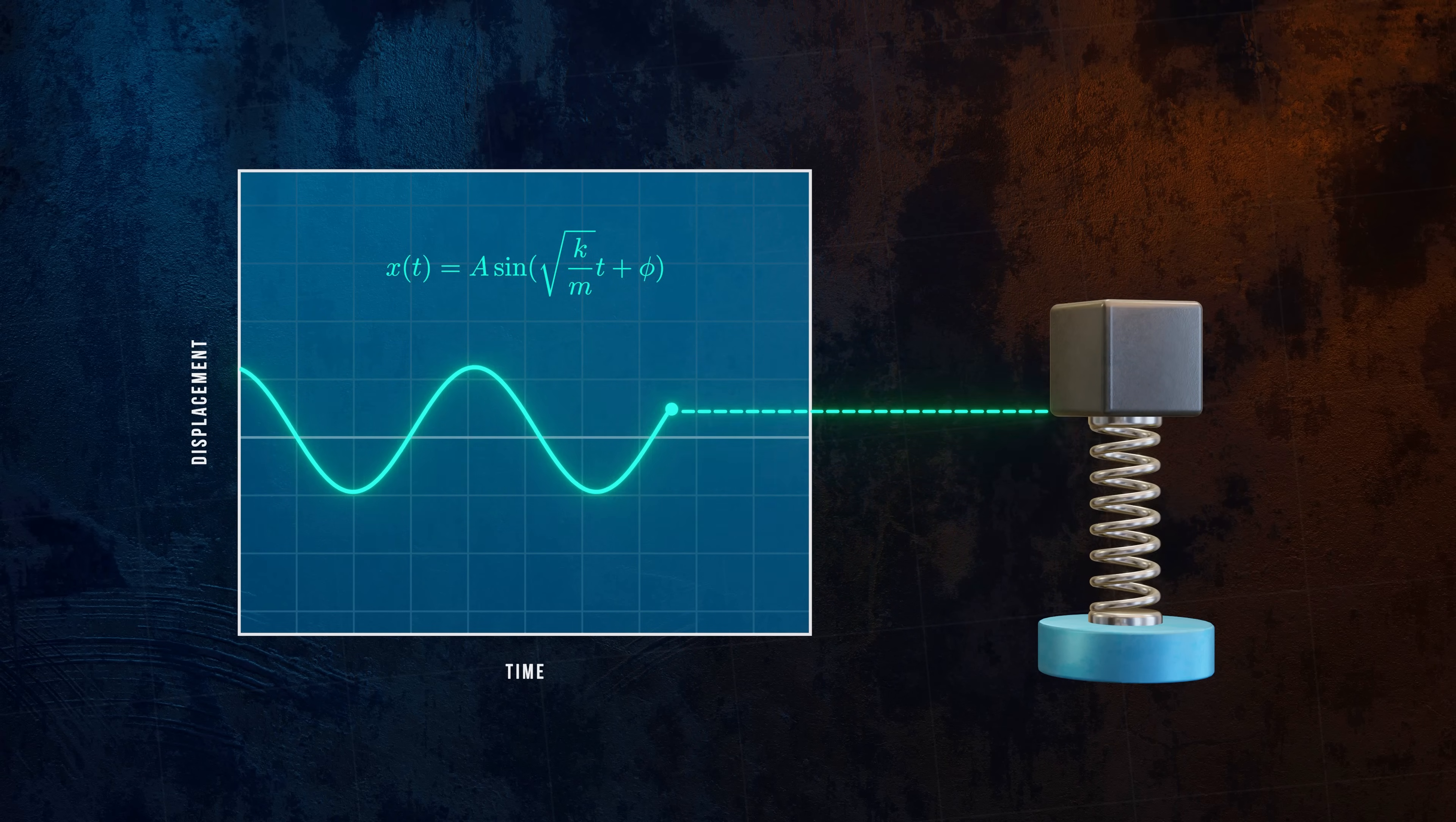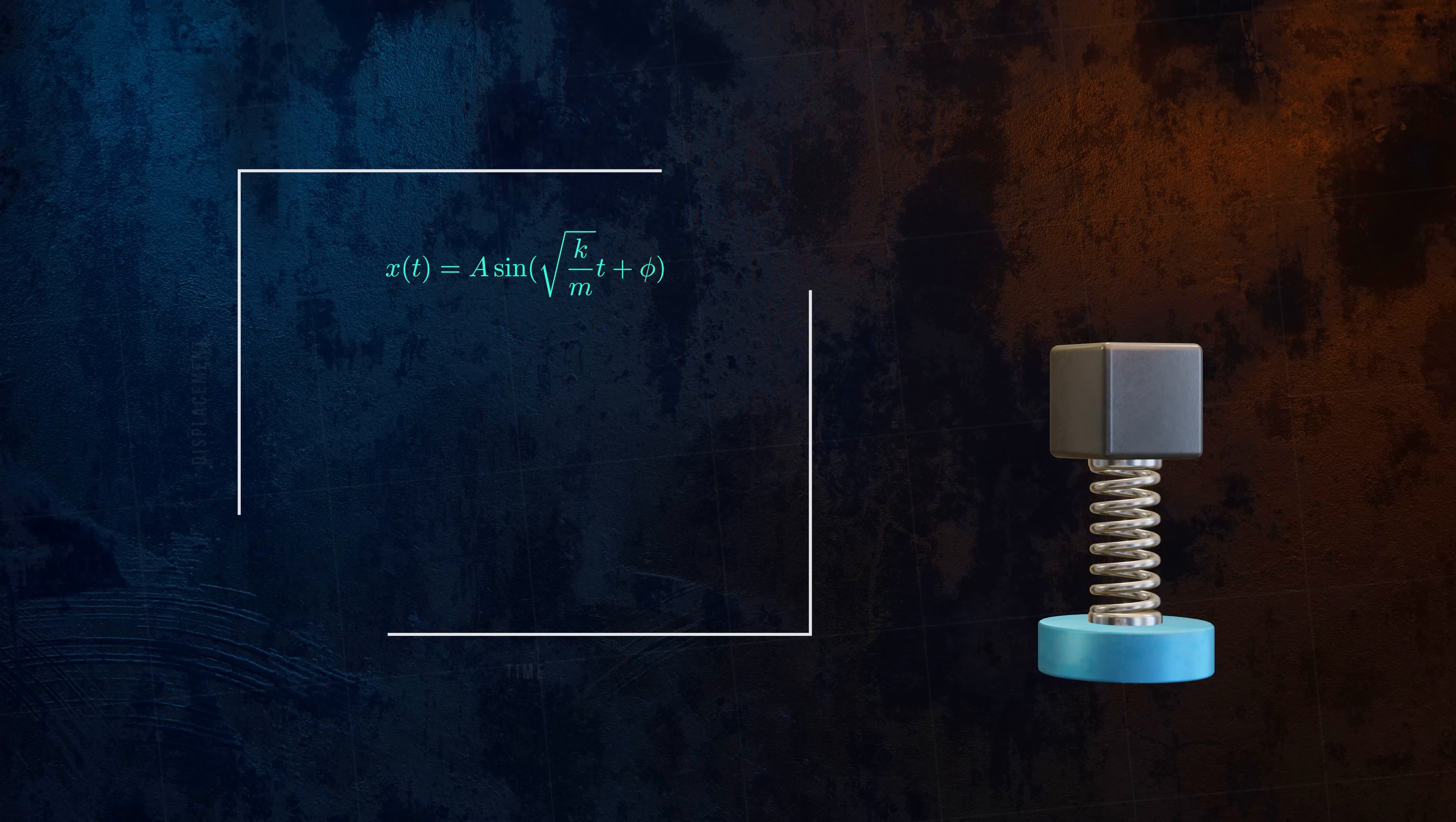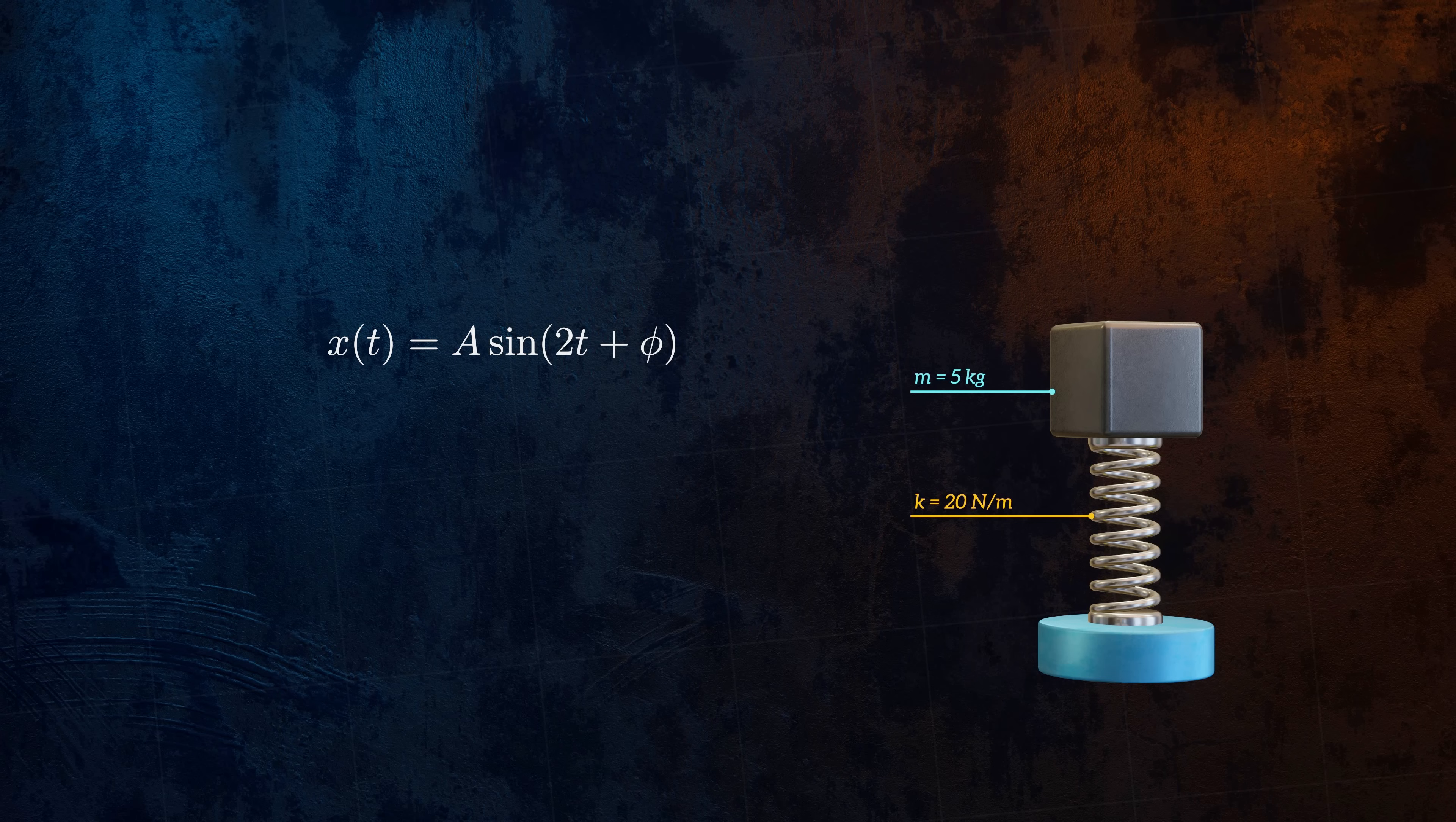We can determine A and phi by considering the initial position and velocity of the mass. Let's look at an example where the system has a mass of 5 kg and a spring stiffness of 20 newtons per meter, and a vibration is triggered by applying an upwards velocity of 2 cm per second to the mass. Since the displacement x is initially 0, the phase angle phi must also be equal to 0. And then we can differentiate the equation for x to calculate the amplitude of vibration A.